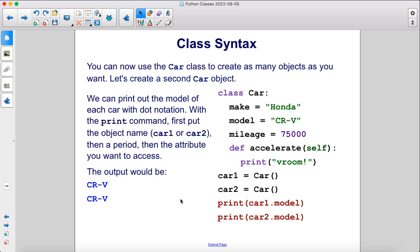We can print out the model of each car with dot notation. With the print command, first put the object name, so car1 or car2, then a period, then the attribute you want to access. The output would be CRV, CRV, since both cars have a model of CRV.